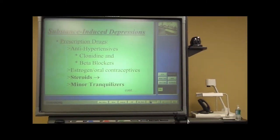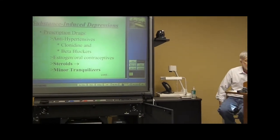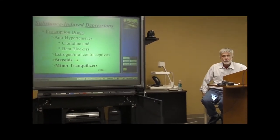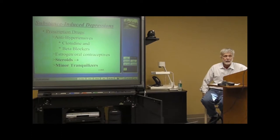The most common beta blocker is Enderol. Generic is Propranolol, and these drugs really work well for people. They're also used to try to prevent migraine headaches.